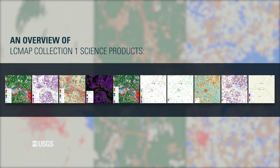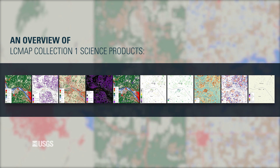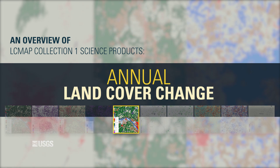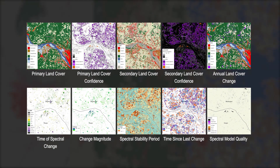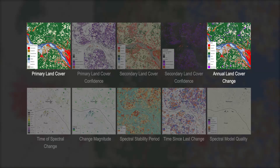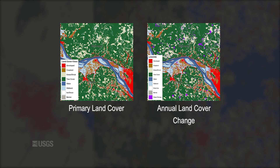An overview of LCMAP Collection 1 Science Products: Annual Land Cover Change. LCMAP Collection 1 Science Products include 10 datasets, offering different perspectives for the study of land change across the country through time. While the annual land cover change product looks very similar to the primary land cover product, it contains additional data allowing users to easily identify annual land cover changes.